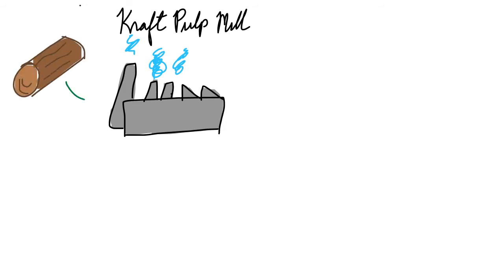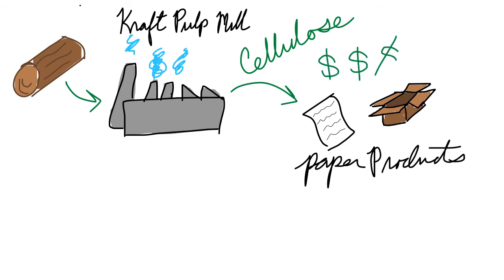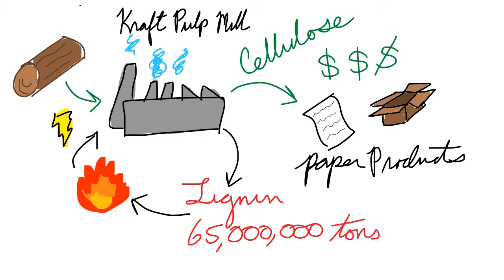Lignin's industrial relevance is currently limited to the pulp and paper industry and primarily kraft pulping. Here, wood is fed into the process and the primary product, cellulose, is converted to various paper products. Lignin is still produced as a byproduct. The primary end use of this lignin is to be burned to generate electricity and power on site for the mill. Every year, approximately 65 million tons of lignin is isolated and approximately 99% of that is just burned.